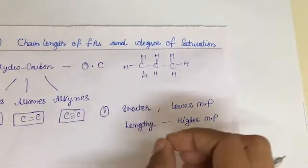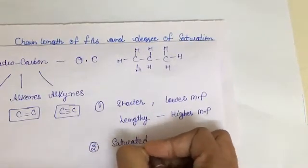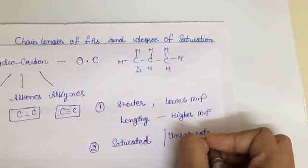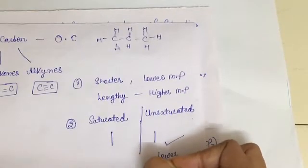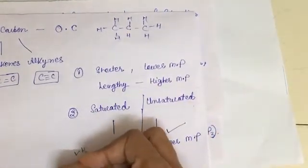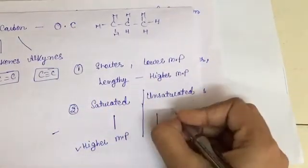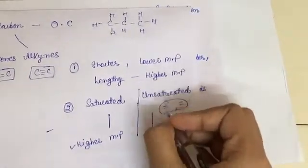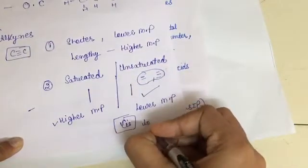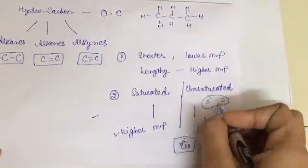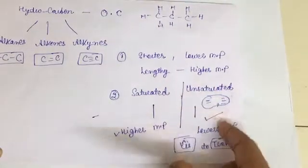If saturated and unsaturated fatty acids have the same chain length, then the unsaturated one will have a lower melting point and the saturated one will have a higher melting point. Unsaturated fatty acids can have double or triple bonds, and in most cases this bonding is cis. Cis bonding is relatively weaker than trans bonding. The double bond chains have kinks, and because of these kinks it is easier to achieve a lower melting point in unsaturated fatty acids.